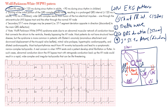Imagine an impulse starting up here, conducting normally, depolarizing the atria. As the atria are being depolarized, conduction travels down this accessory pathway as well as down the AV node. But there's a conduction delay at the AV node, so it's likely going to go down the bypass tract first. The impulse comes down the bundle of Kent and starts to depolarize the ventricles, and eventually the normal AV node conduction catches up.